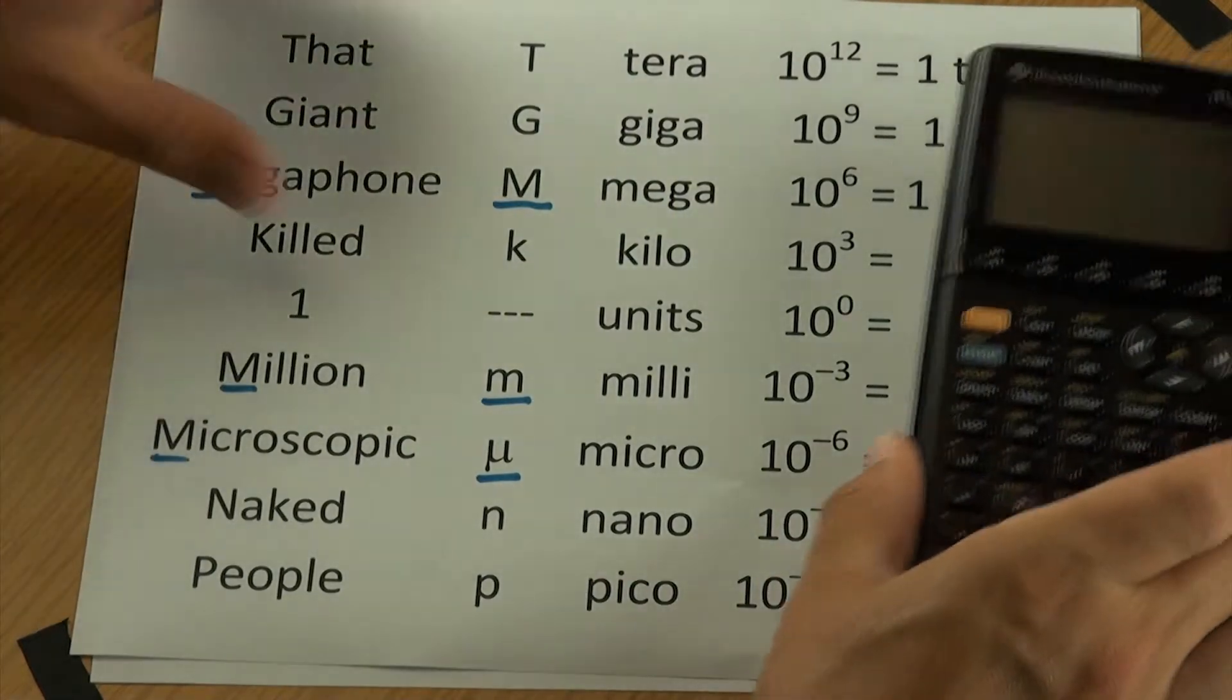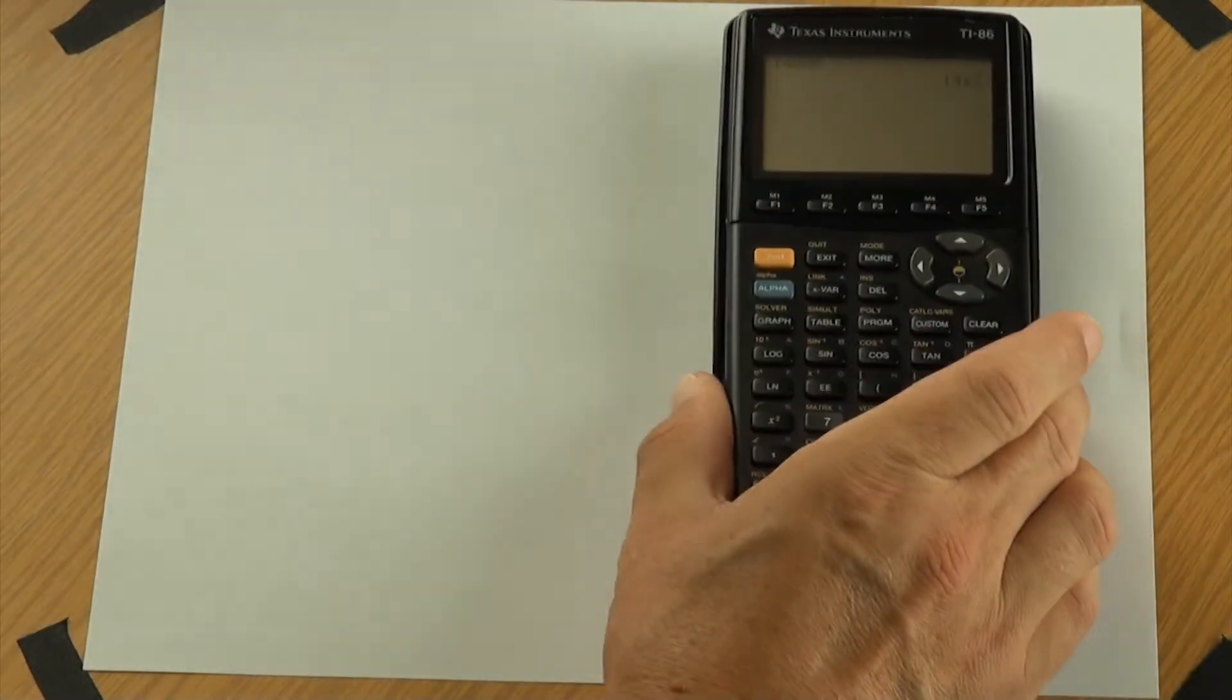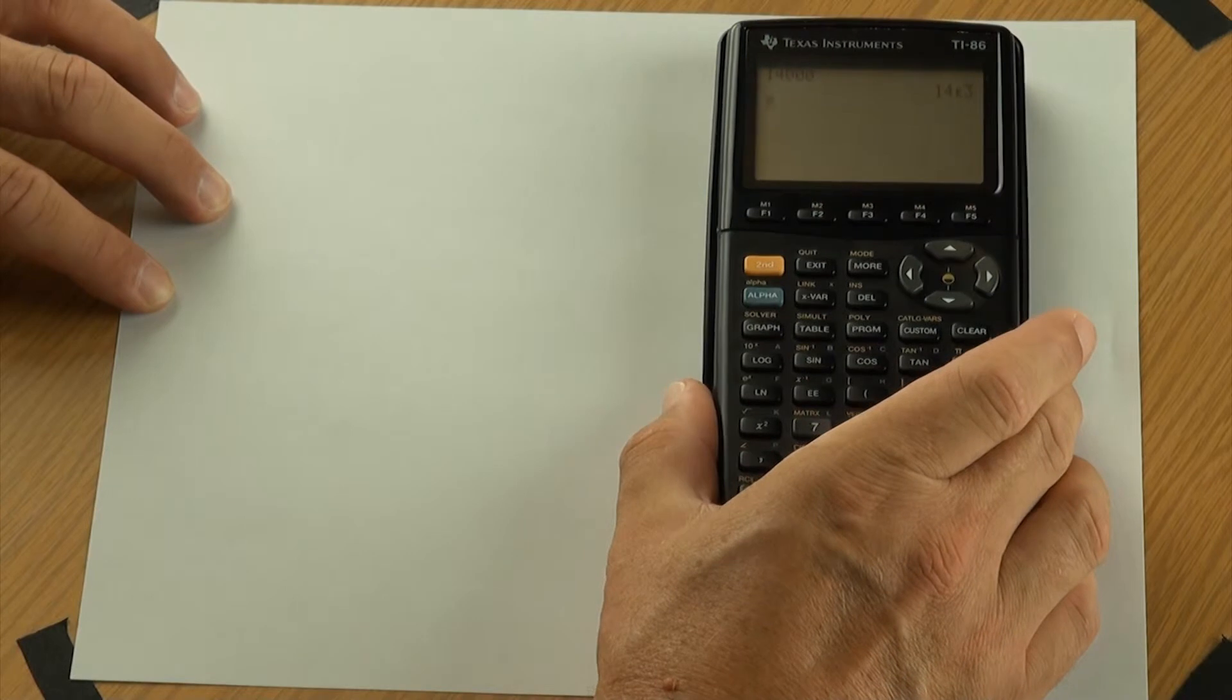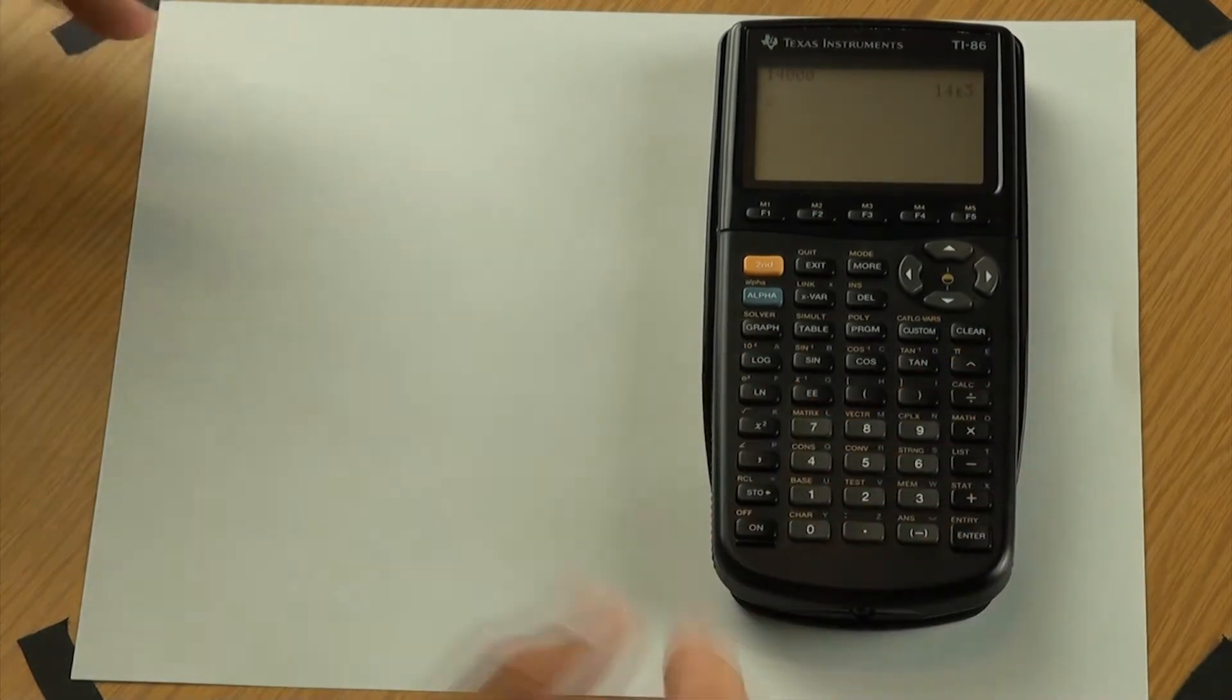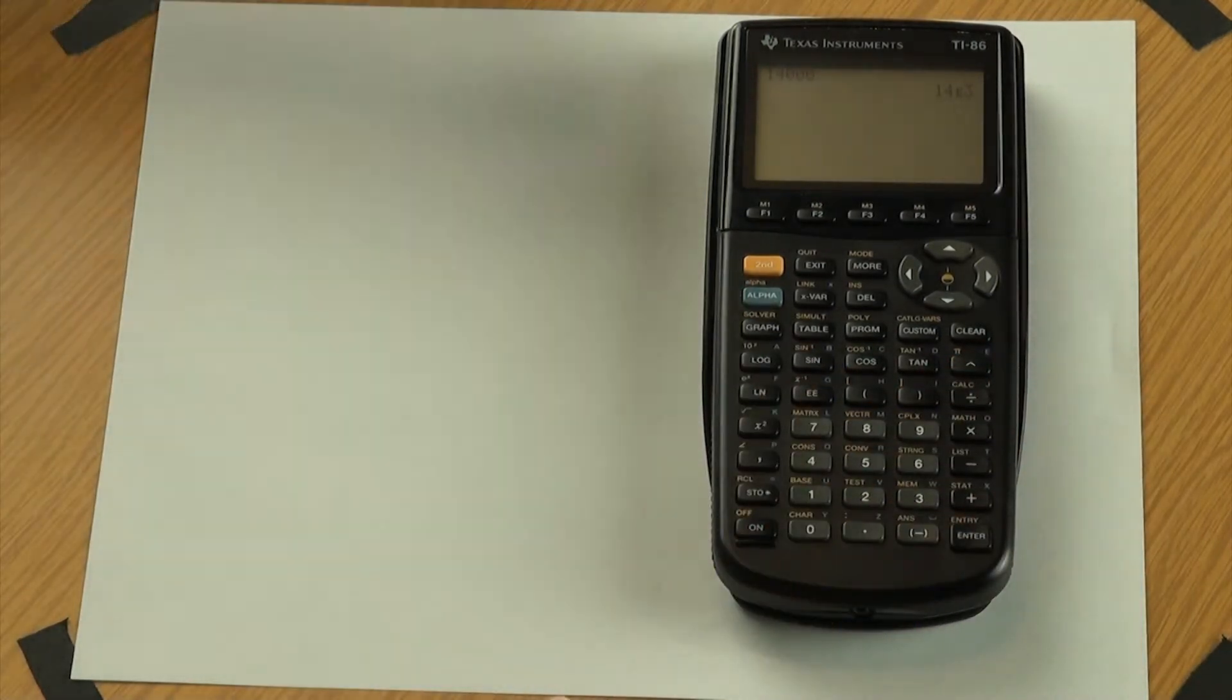Once you have the calculator in the engineering mode, as you want it to be, anything you put into the calculator, do any sort of a calculation, it should give you the result in engineering notation. So you've already got the result laid out the way you want it to. As I transfer that to paper, I'll replace that exponent with the proper metric prefix.